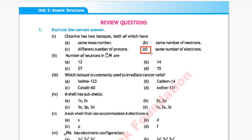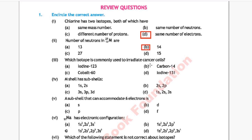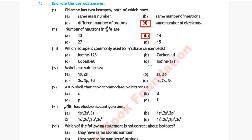Question 2: Number of neutrons in an atom with atomic number 13 and mass number 27. Option A: 13, Option B: 14, Option C: 27, Option D: 15. The correct answer is Option B, which is 14.